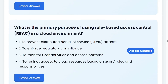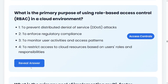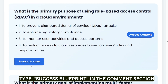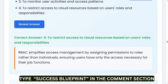What is the primary purpose of role-based access control in cloud environments? Option one: to prevent distributed denial of service (DDoS) attacks. Option two: to enforce regulatory compliance. Option three: to monitor user activities and access patterns. Option four: to restrict access to cloud resources based on users' roles and responsibilities. The correct answer is four: to restrict access to cloud resources based on users' roles and responsibilities.